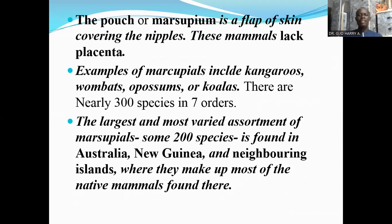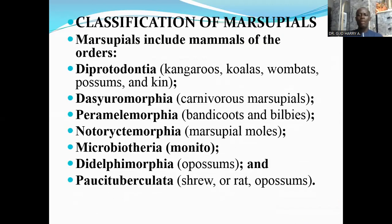There are nearly 300 species in seven orders. The largest and most varied assortment of marsupials — some 200 species — is found in Australia, New Guinea, and neighboring islands, where they make up most of the native mammals found there.